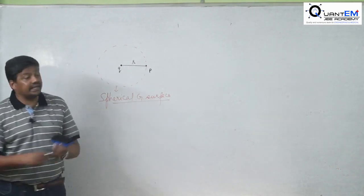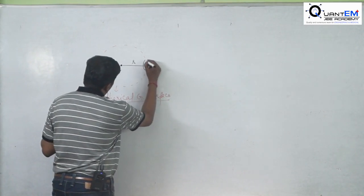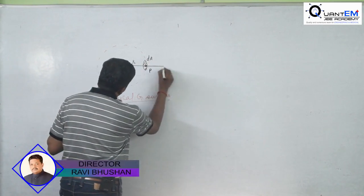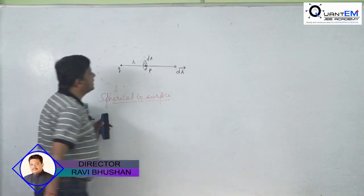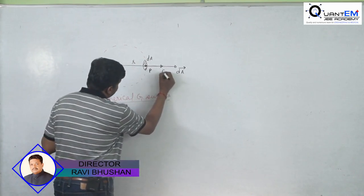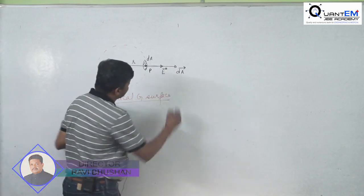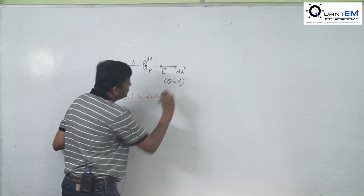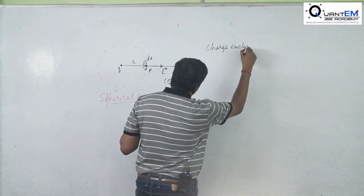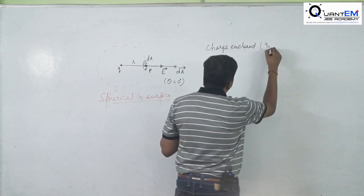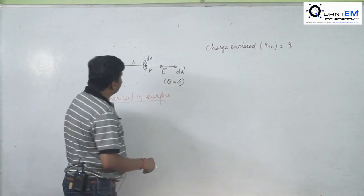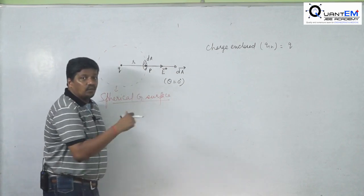On the spherical Gaussian surface, take a small area element dA. For a positive charge, lines of force diverge radially, so the electric field E and the area vector dA are in the same direction — theta equals zero degrees. The charge enclosed Q-in is simply Q, the entire point charge being inside the Gaussian surface.